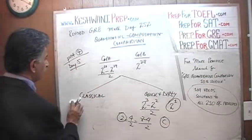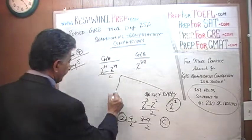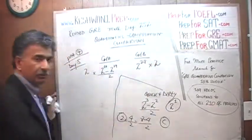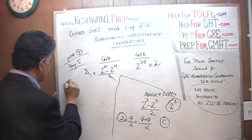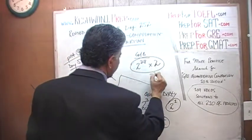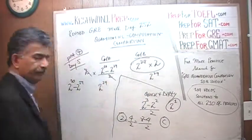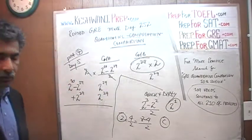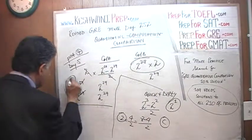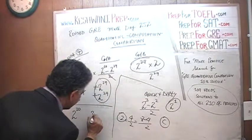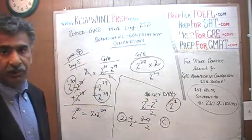Now let's do the classical way. Let's multiply both columns by 2 so the denominator drops out, and we end up with 2 raised to 30 minus 2 raised to 29 versus 2 raised to 28 times 2, which is 2 raised to 29. Now let's add 2 raised to 29 to both sides: 2 raised to 29 drops out on the left and we are left with 2 raised to 30. On the right we have 2 raised to 29 plus 2 raised to 29, which is 2 times 2 raised to 29, which of course is 2 raised to 30. The answer is C.